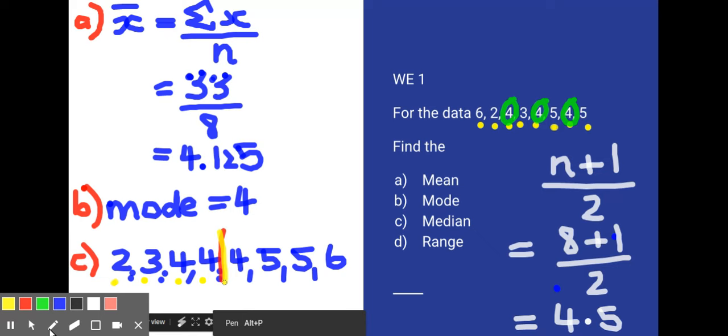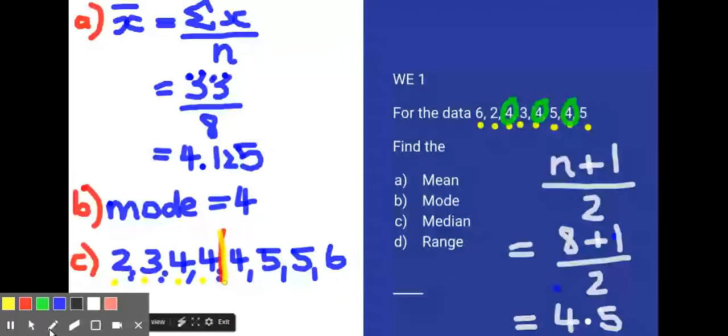The 4.5th result would be 1, 2, 3, 4 and a half, so it's between 4 and 4. The median sits halfway between 4 and 4, which means it is 4.